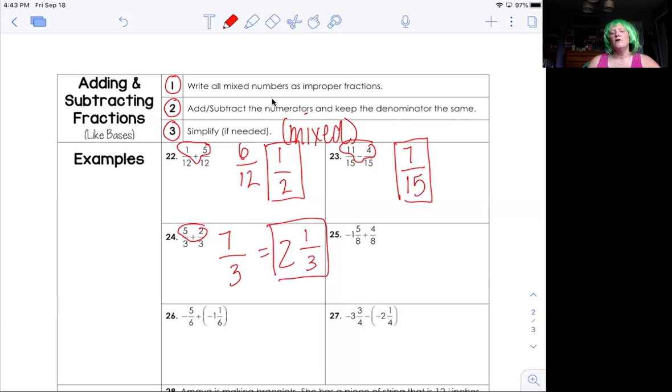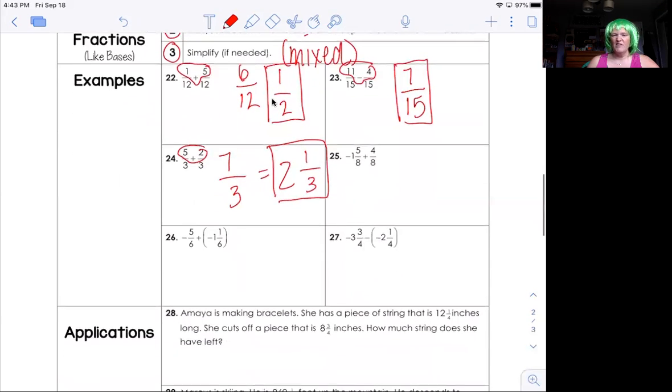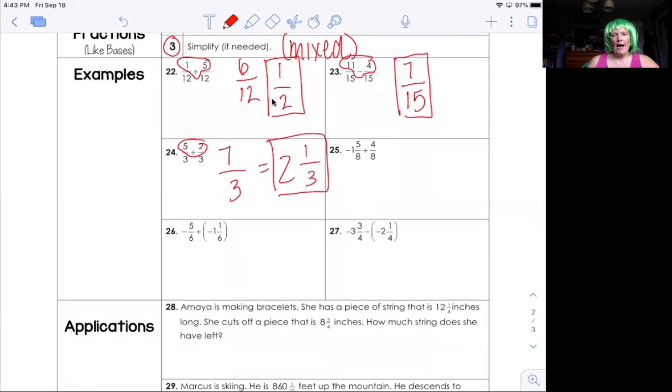I want to do one more with you. I'm going to do number 26 with you. This has some negatives in it and these are always a little bit harder. When I rewrite this, because we have to rewrite it anyway because of the mixed number, I always put the negative sign on the top because you can't actually put the negative sign on the bottom.